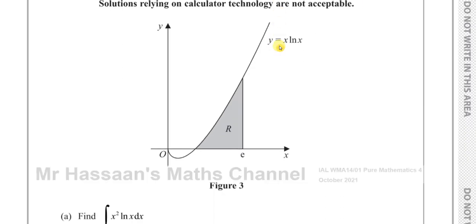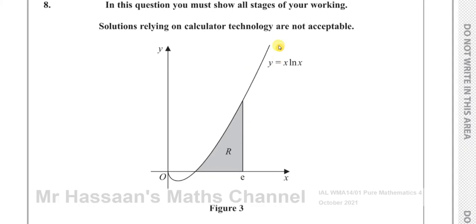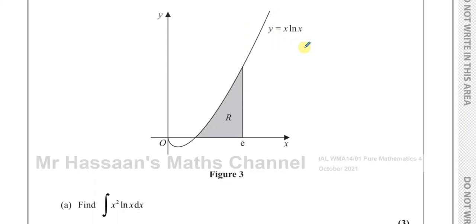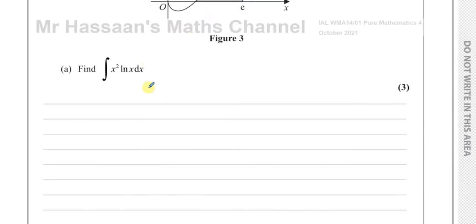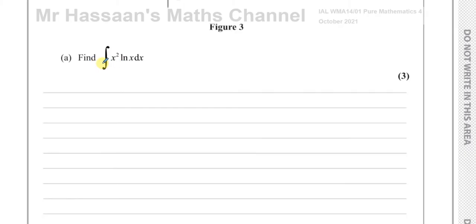This question is about integration. Part A is simply telling us to integrate the expression x squared times ln x with respect to x. It doesn't tell us how to integrate it, but it's quite obvious we need to use integration by parts, as you have a product of two separate functions and this cannot be integrated in another way — it has to be done by parts.